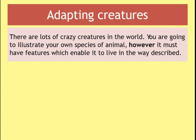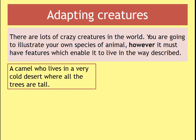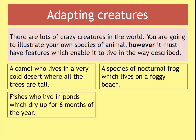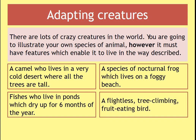You could choose a camel that lives in a very cold desert with tall trees, or a nocturnal frog — remember nocturnal means it comes out at night — that lives on a foggy beach, or fish that live in ponds that dry up for six months of the year, or a flightless tree-climbing fruit-eating bird. You only need to choose one. Pause the video while you draw it, but remember your diagram must match the features.